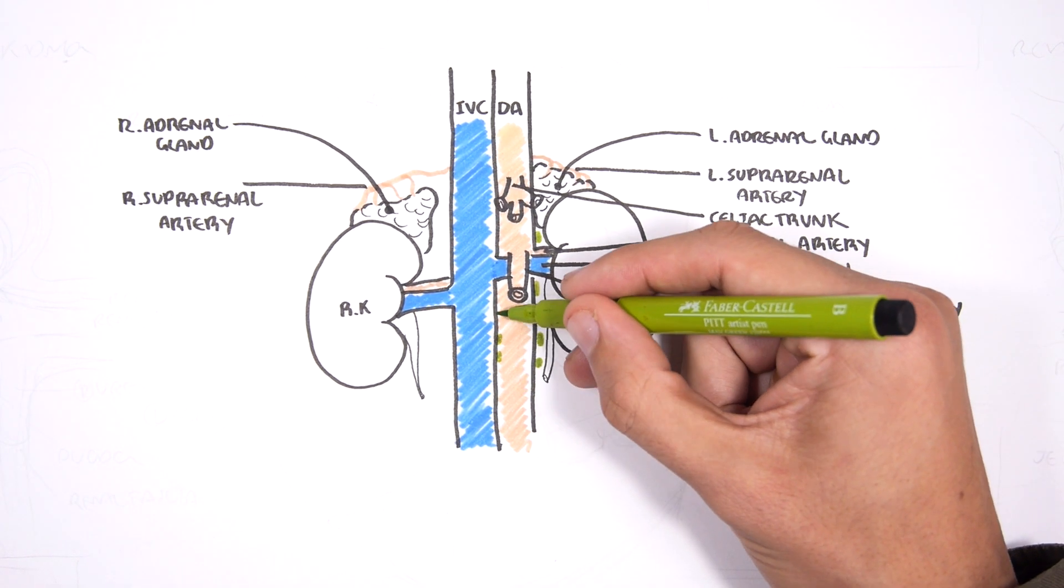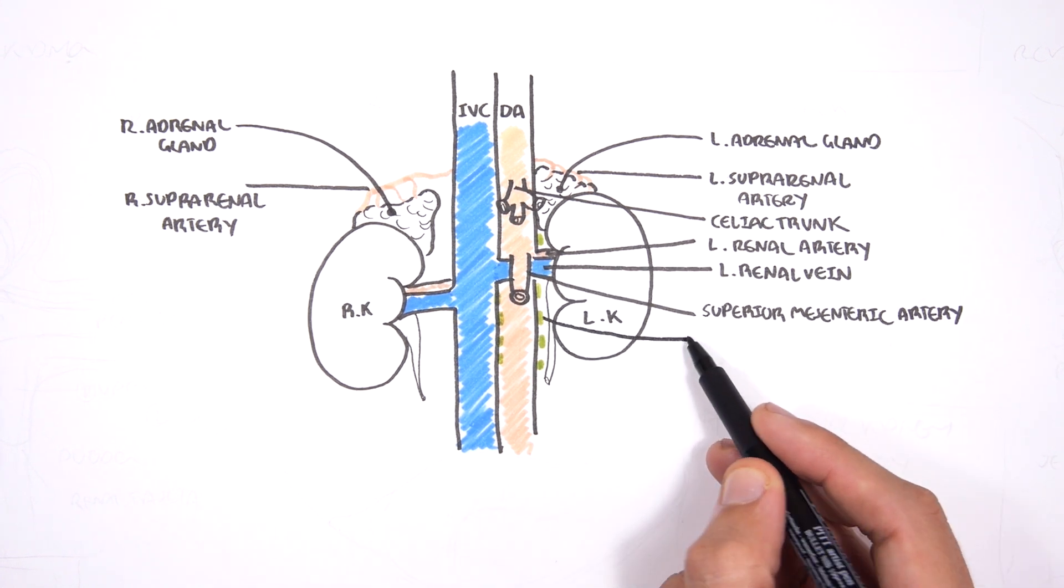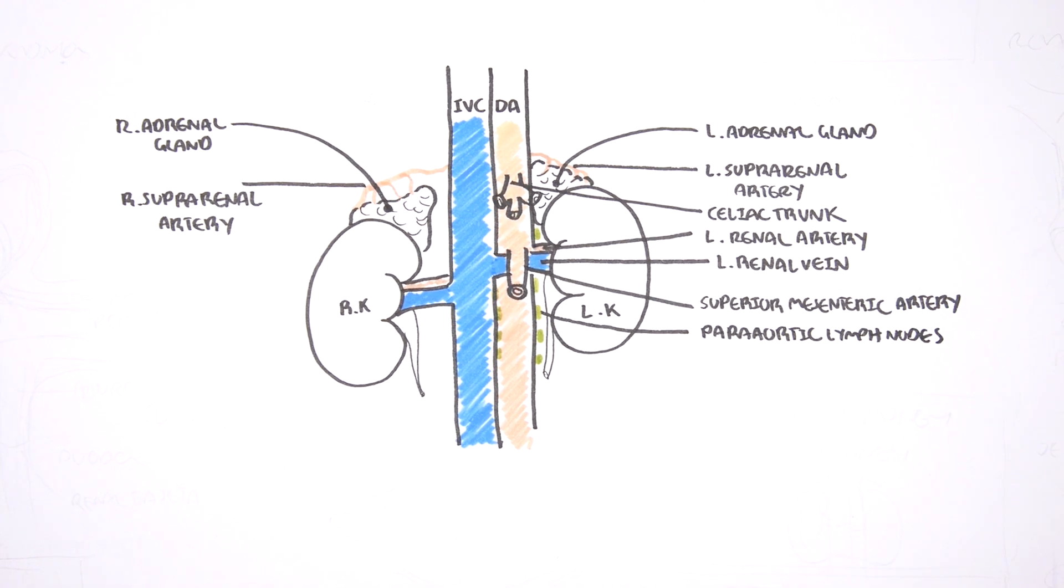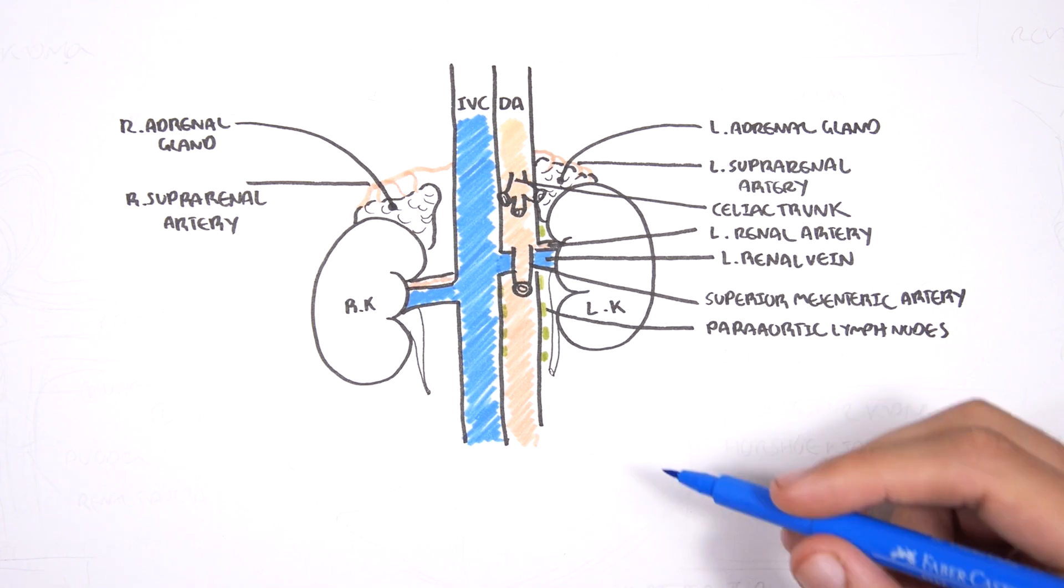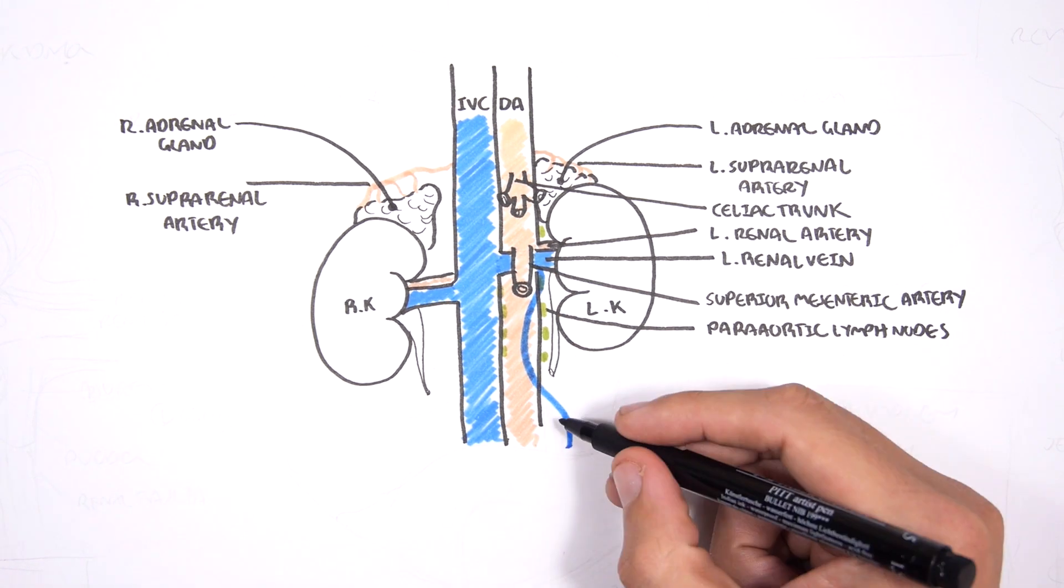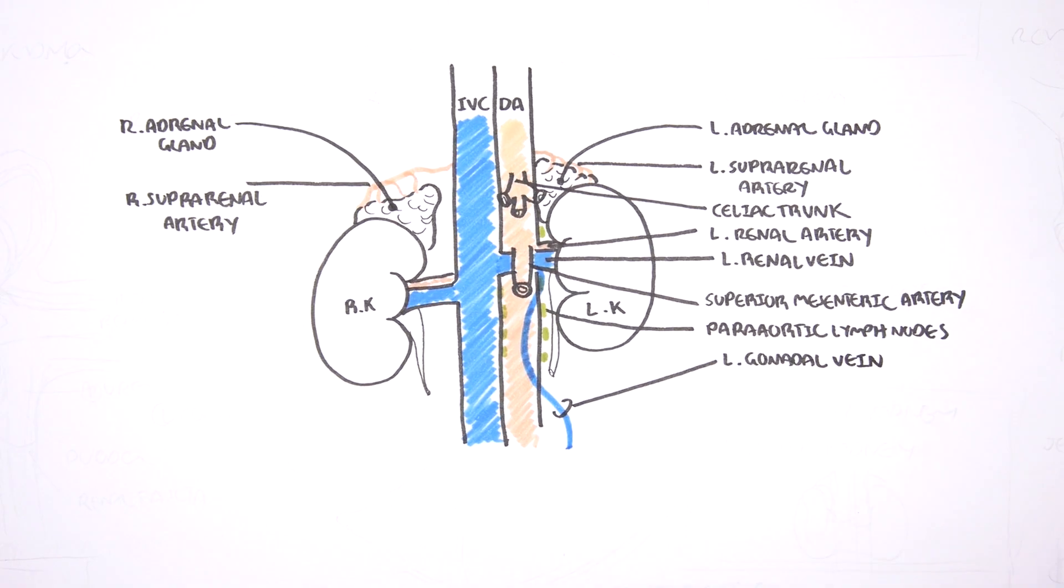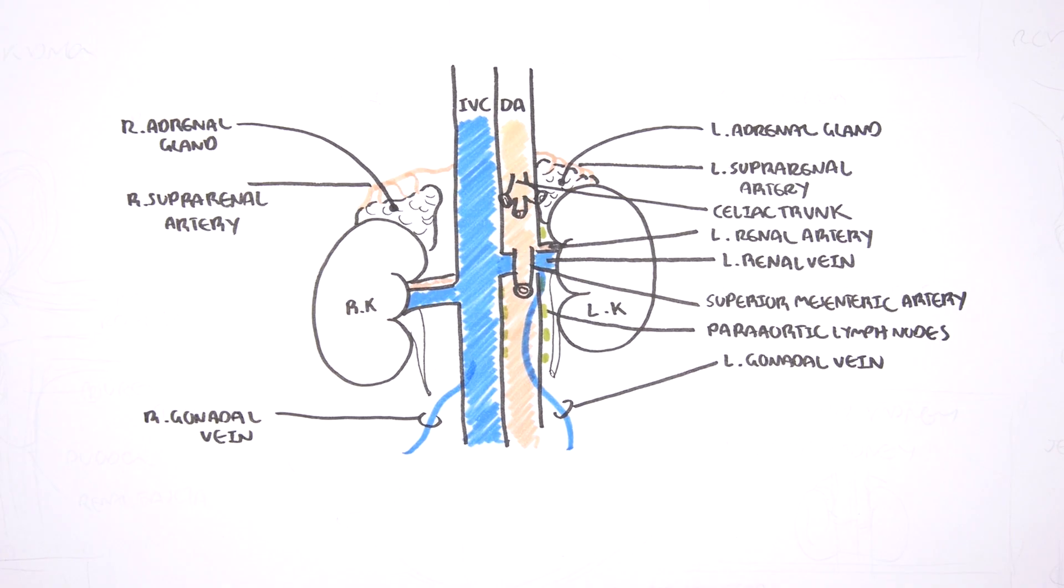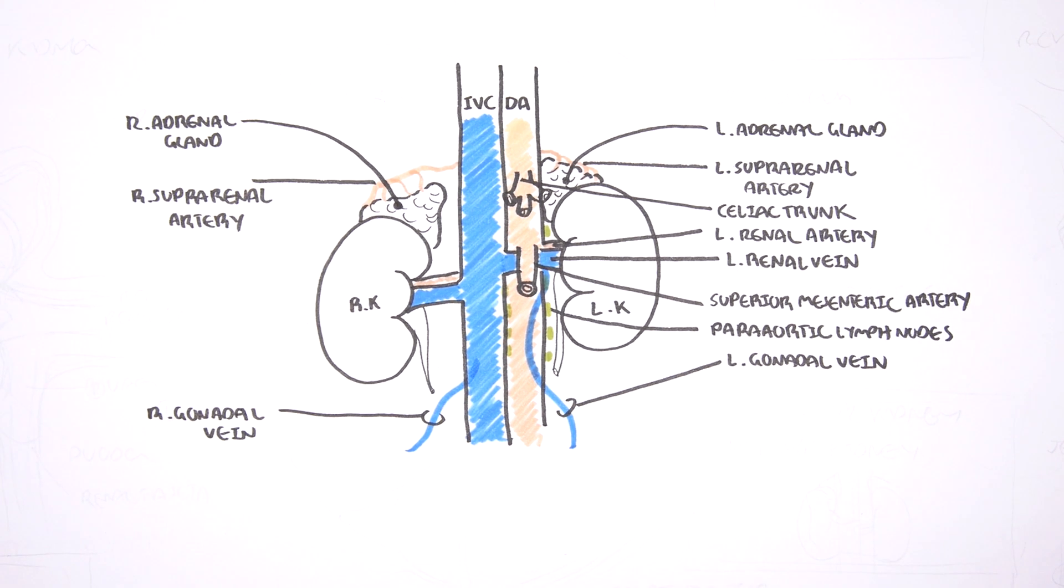Very important to know that there are lymph nodes that essentially are surrounding the aorta, the descending aorta, called the para-aortic lymph nodes. The lymph drainage from the kidneys go here. It's important to remember that the left gonadal vein drains into the left renal vein whereas the right gonadal vein drains into the inferior vena cava. And this has some clinical relevance especially in renal cancer as renal cancer can present with left-sided varicocele.